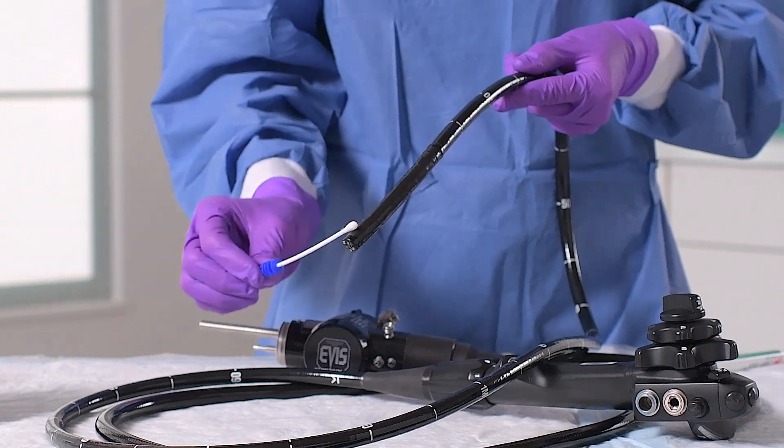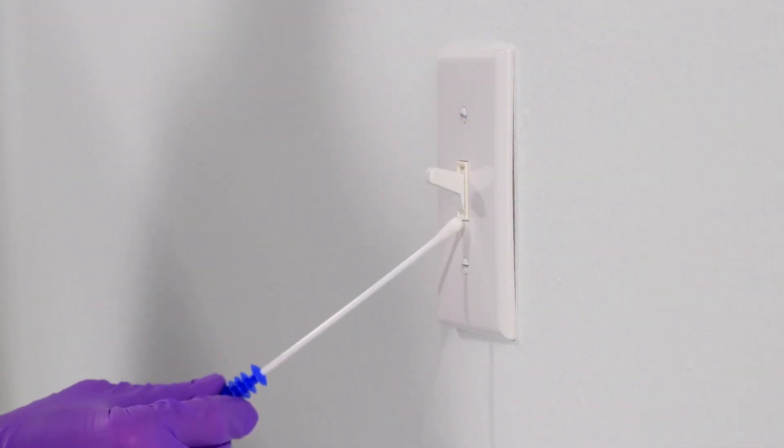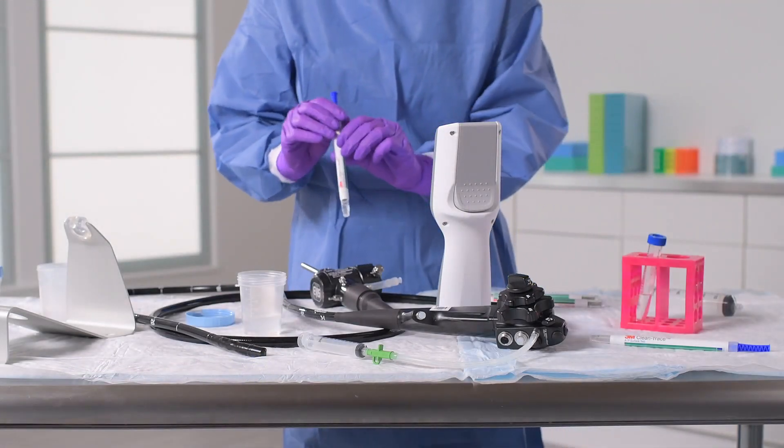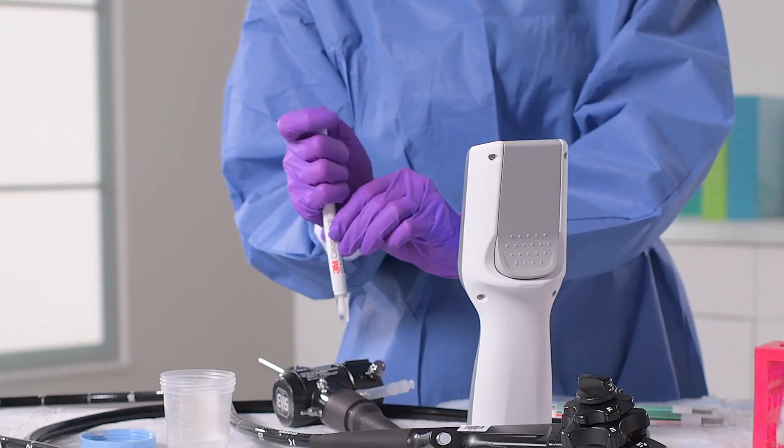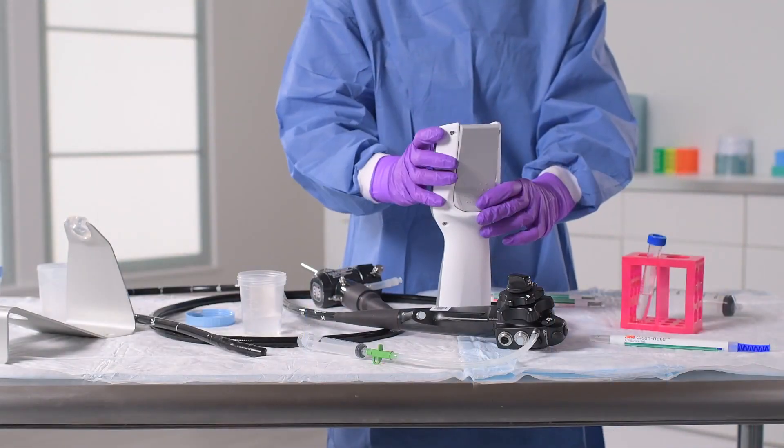To measure ATP levels, start with collecting your sample with the CleanTrace surface or water test. Activate the ATP test by inserting into the device sleeve and shaking side to side. Then, insert into the Luminometer.